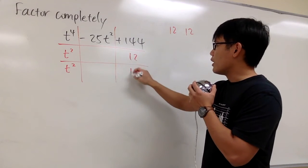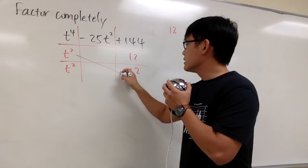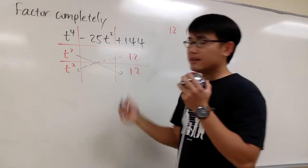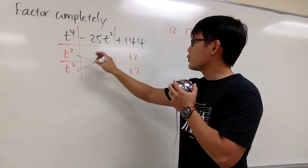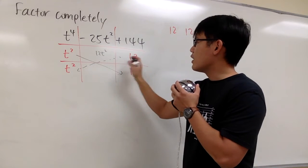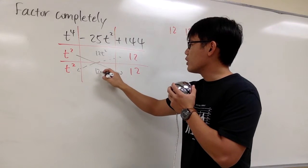If I put in 12 and 12, I have to do this and that, right? So t squared times 12 is, well, 12t squared and then 12 times t squared is another 12t squared.